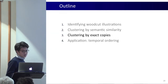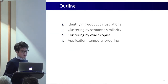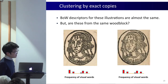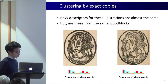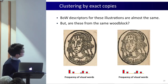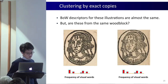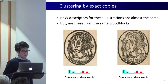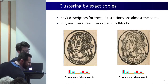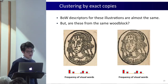Having clustered the similar looking images, we determine which of the illustrations come from the same woodblock. Take a look at these two images. Can you see the difference between the two? If you look carefully you can — the eyes are slightly different. But we have a collection of thousands of images and that would take a really long time, so we learn a classifier to automate the detection of copies.